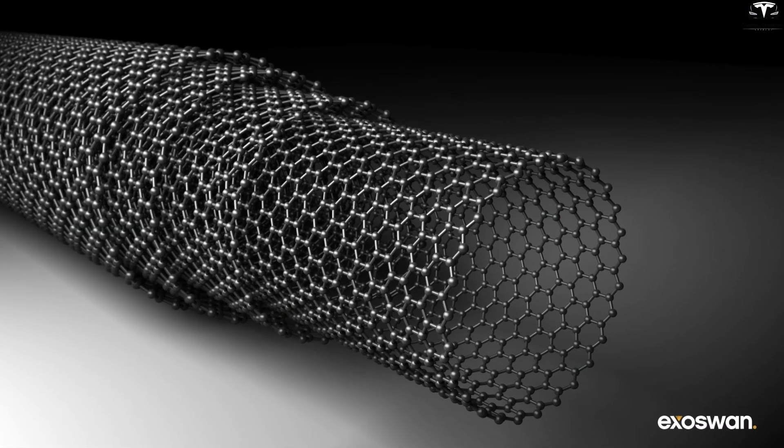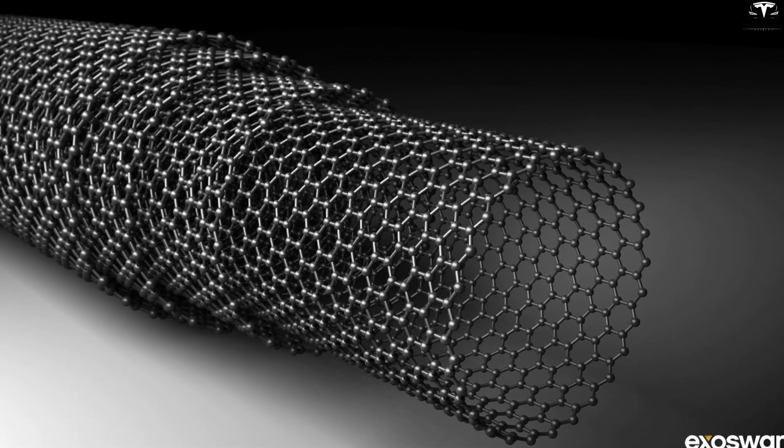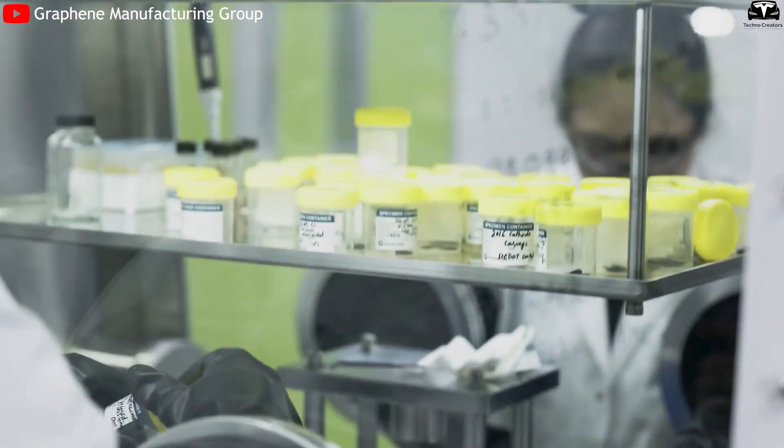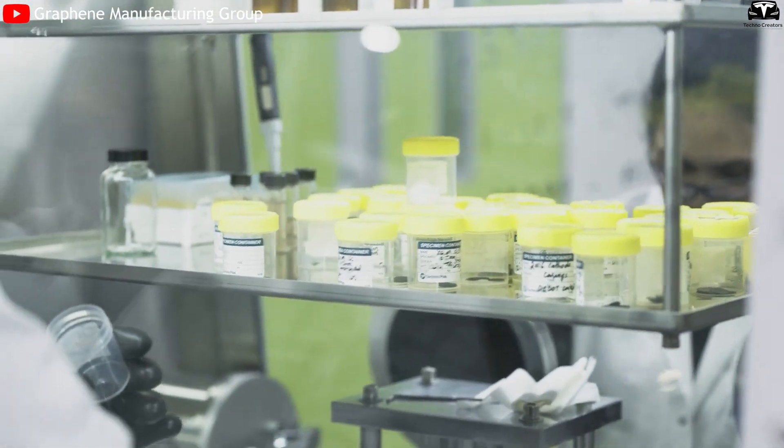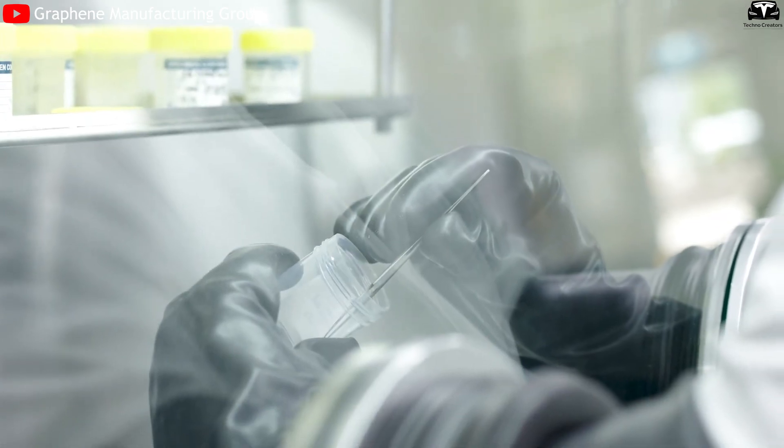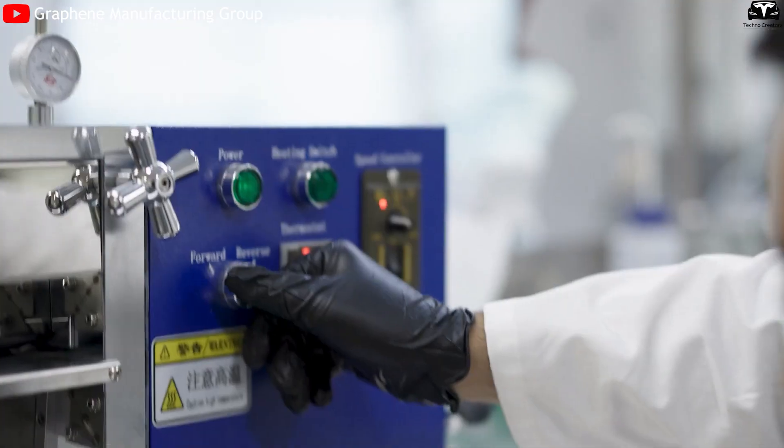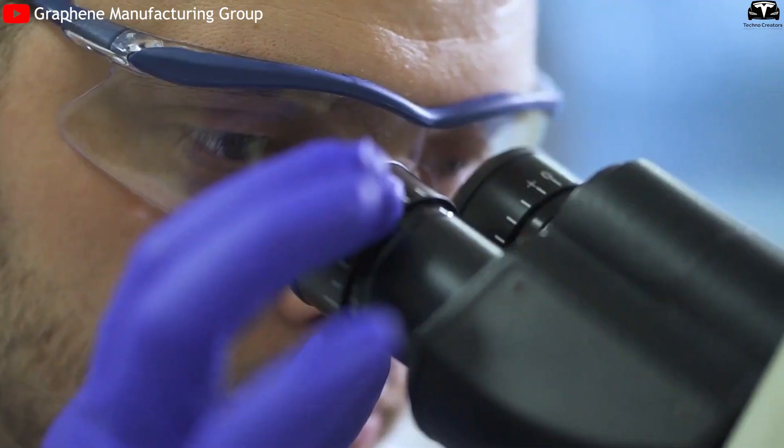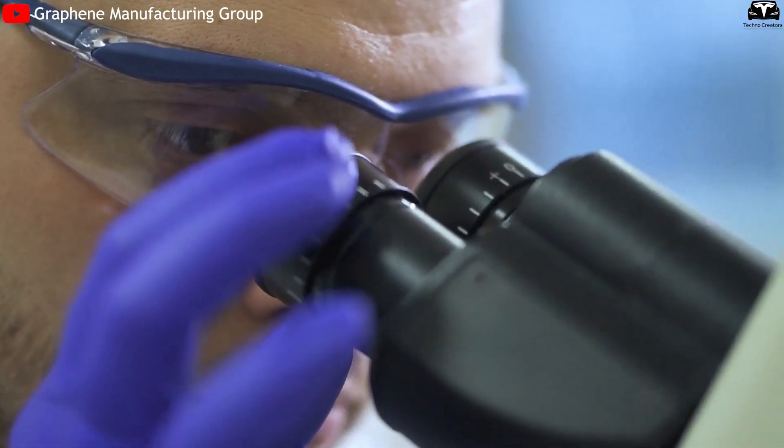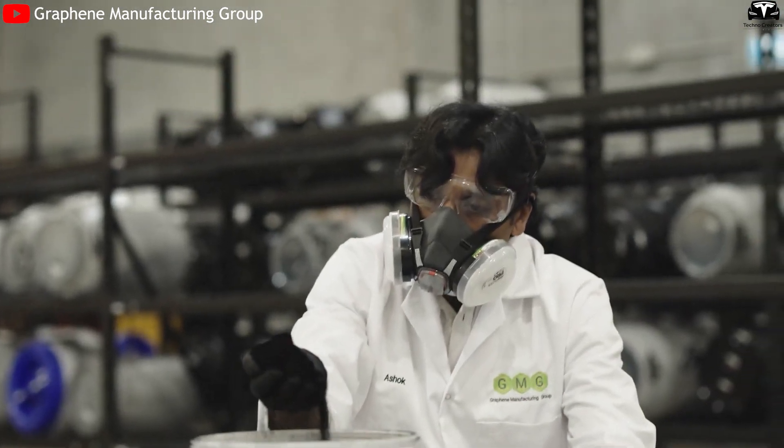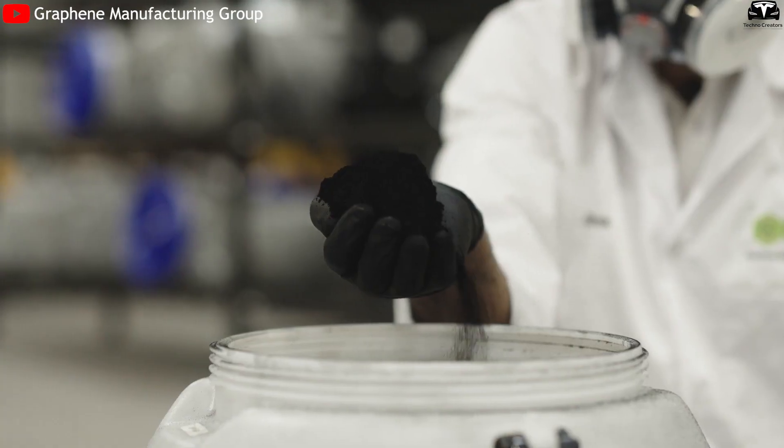However, producing high-quality graphene at scale remains a key challenge that manufacturers are actively addressing. Companies like GMG have developed proprietary methods to synthesize graphene efficiently and with high purity. This involves chemical vapor deposition or exfoliation techniques that produce graphene sheets suitable for battery electrodes. GMG's proprietary approach focuses on reducing production costs while maintaining the material's superior electrical conductivity and mechanical strength.